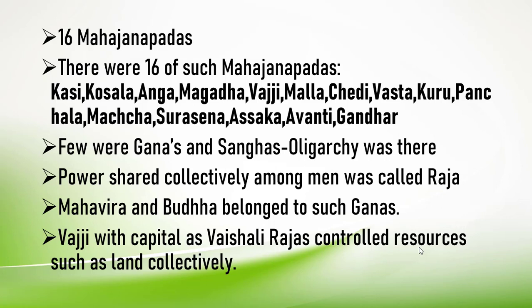The 16 Mahajanapadas were: Kasi, Kosala, Anga, Magadha, Vajji, Malla, Chedi, Vatsa, Kuru, Panchala, Matsya, Surasena, Asaka, Avanti, and Gandhara. You have to remember these, but in our book only 5–6 Mahajanapada names are elaborated. Some were ganas and sanghas — oligarchies were also there. In ganas and sanghas, power was shared among a group of people and they were called rajas. Ganas and sanghas were smaller areas below the Mahajanapadas level.